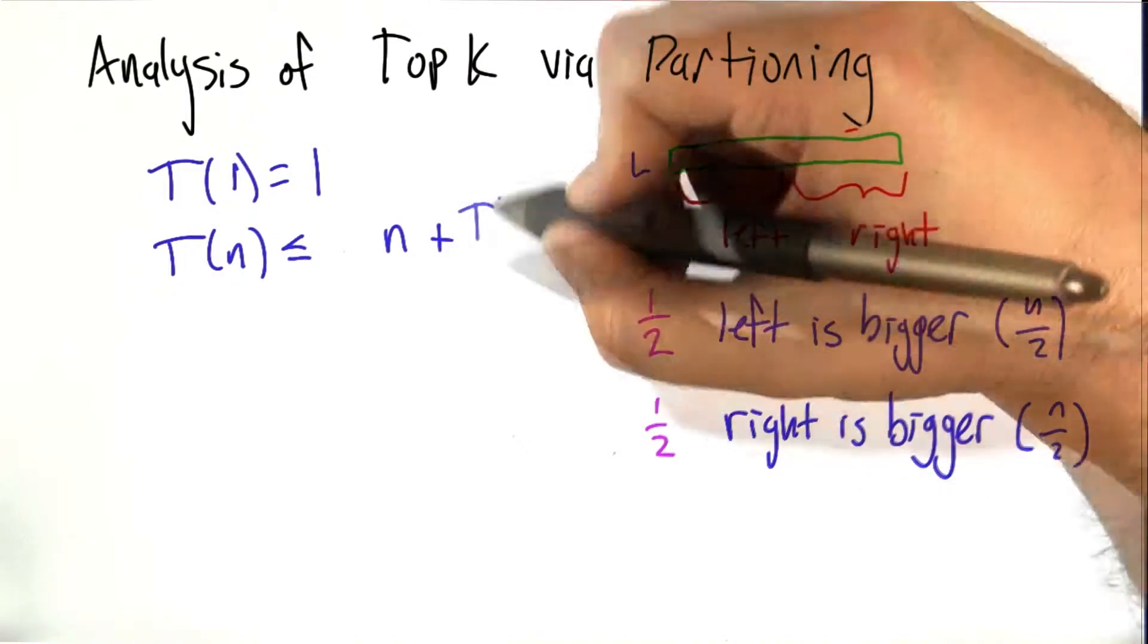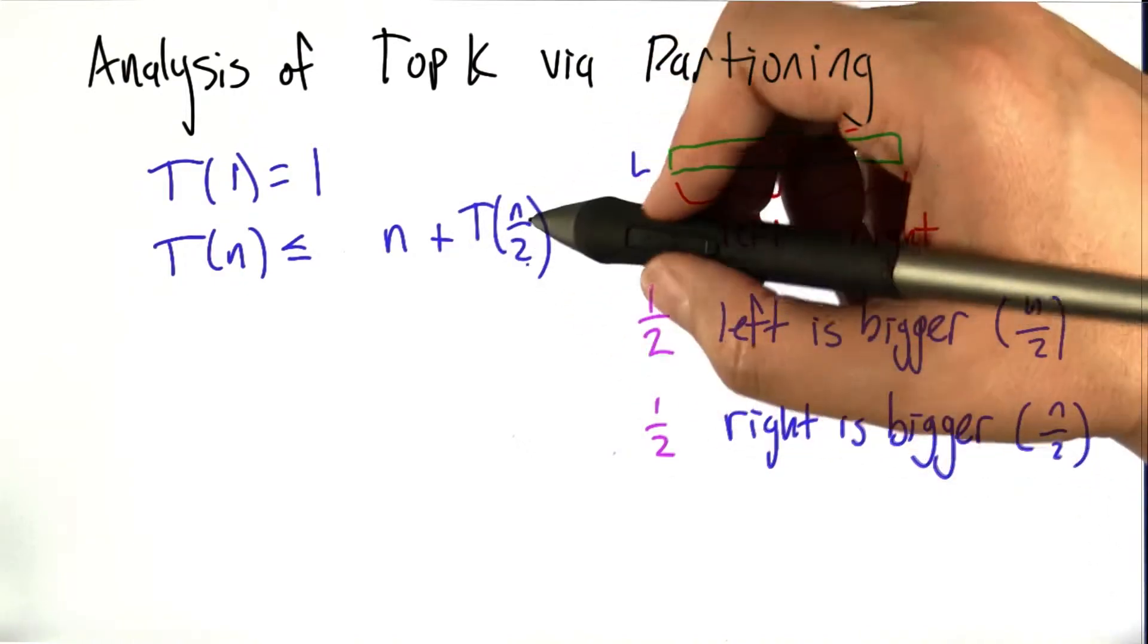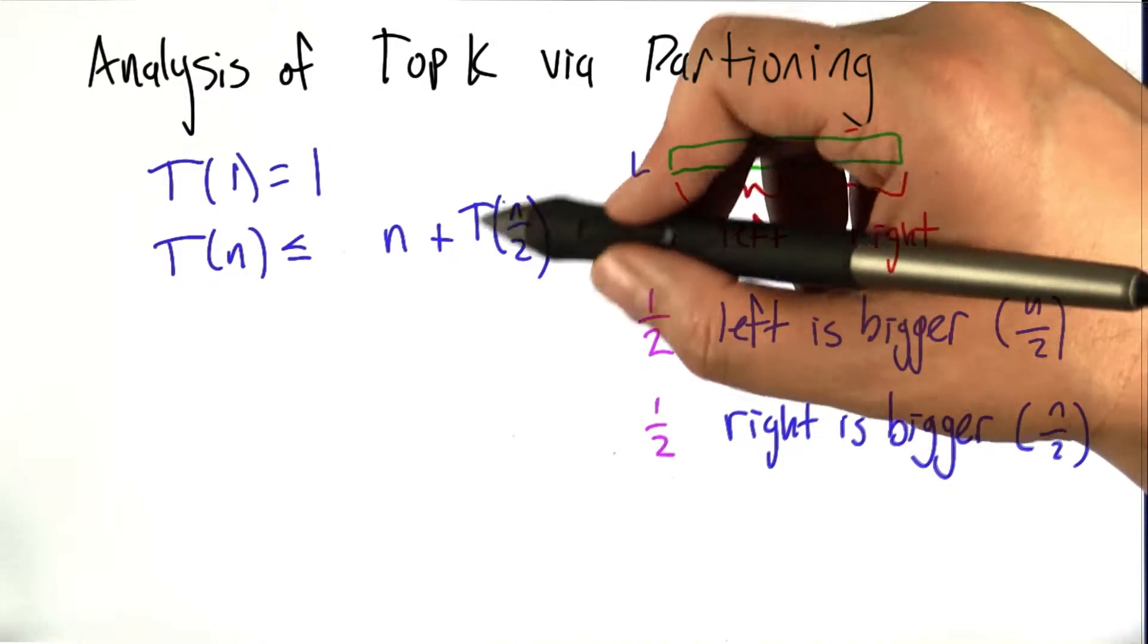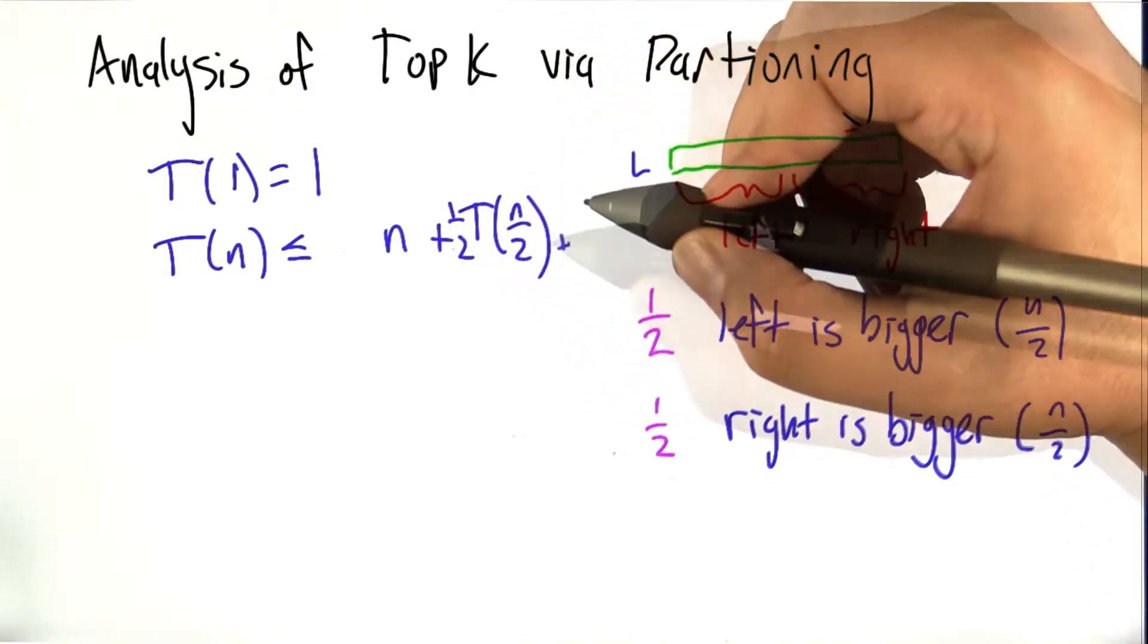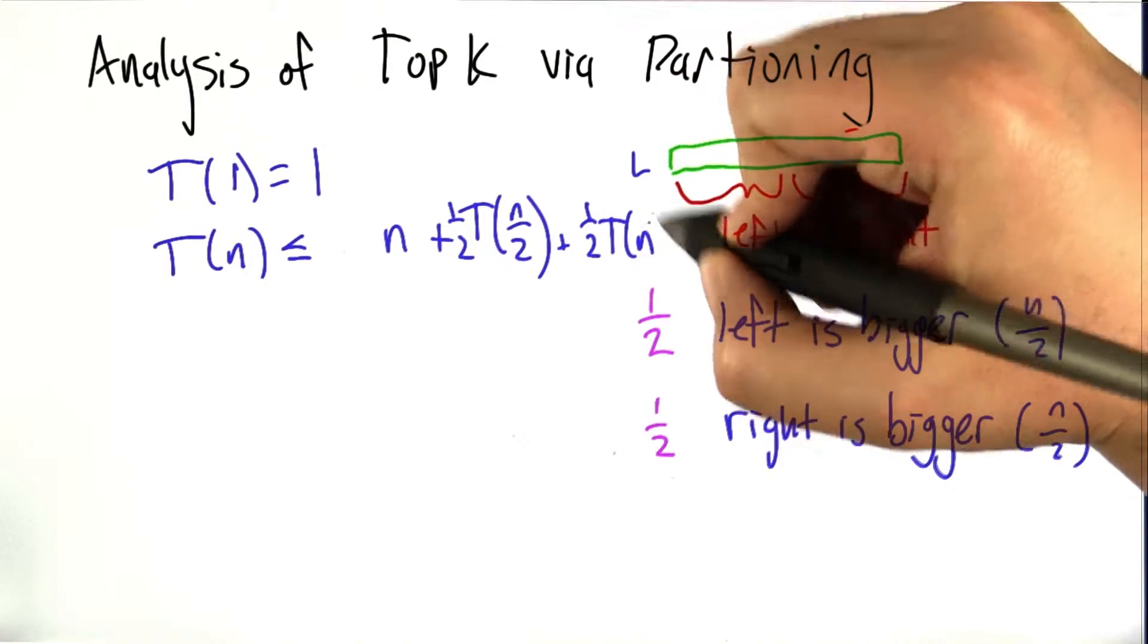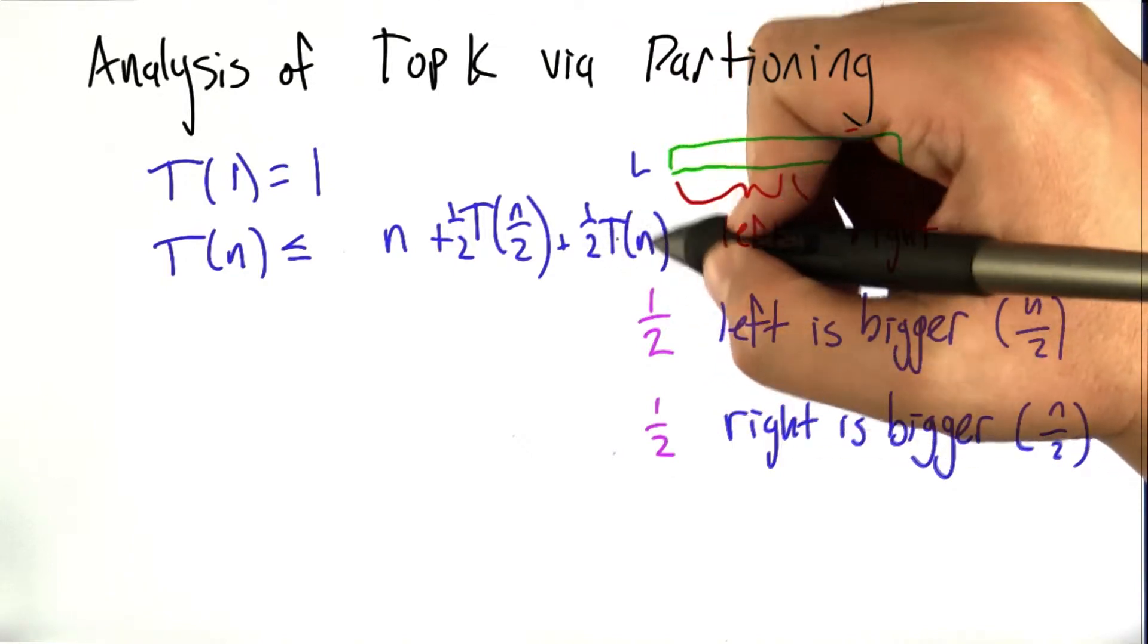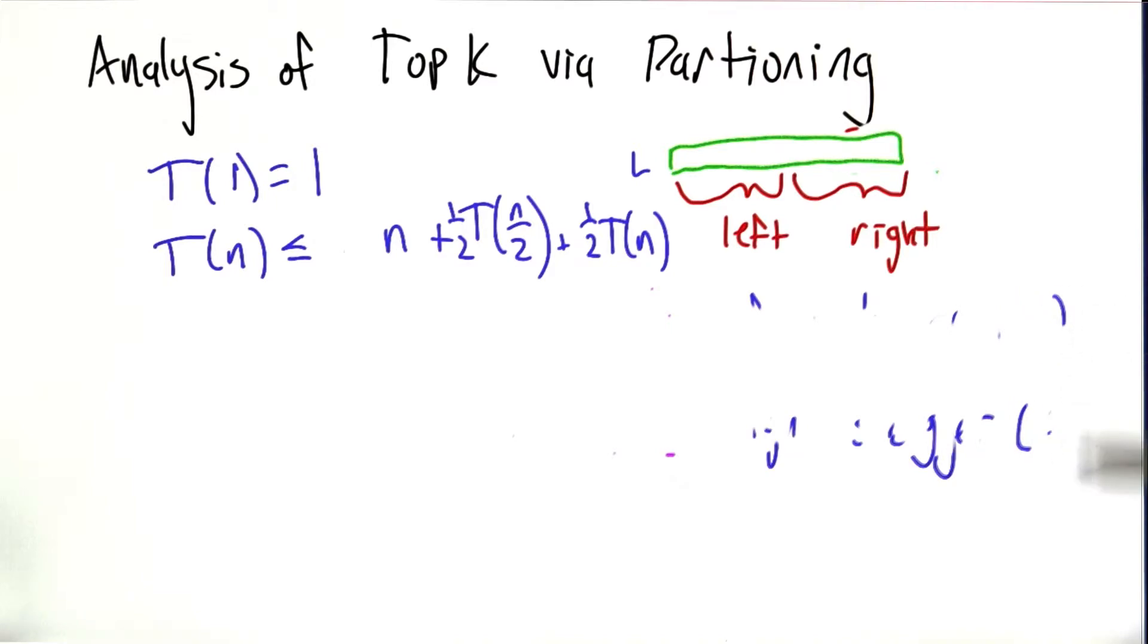So if the recursive algorithm gets called on the smaller half, then the work that it has to do is whatever the recursive running time is on a list of size n over 2 or smaller. This is an upper bound. And that happens with probability a half. But we might also get unlucky and have to recurse on the larger half, which could involve actually something almost the size of the entire list.